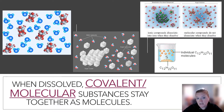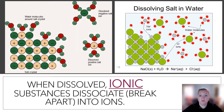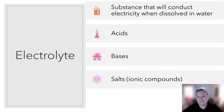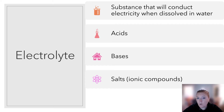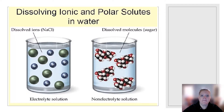When dissolved, covalent or molecular substances stay together as molecules — they stay as one unit. Ionic substances dissociate or break apart into ions. Something that is an electrolyte means it conducts electricity when dissolved in water. There are three things that are electrolytes: acids, bases, and salts. Anything that is an acid, a base, or a salt is always an electrolyte.